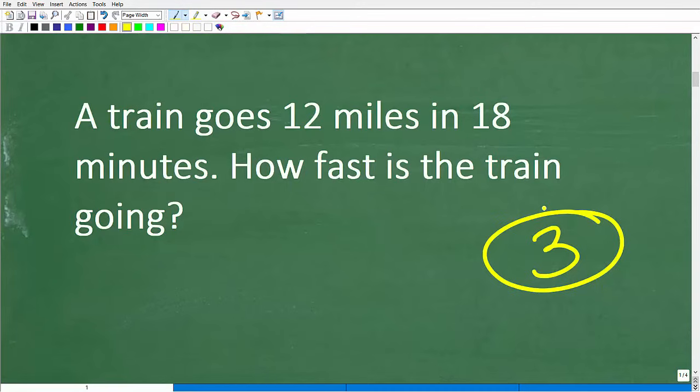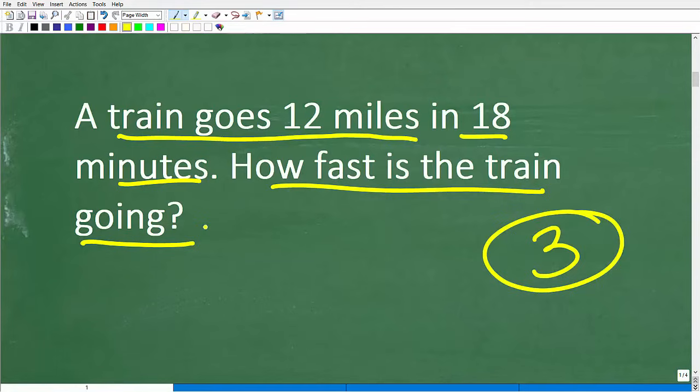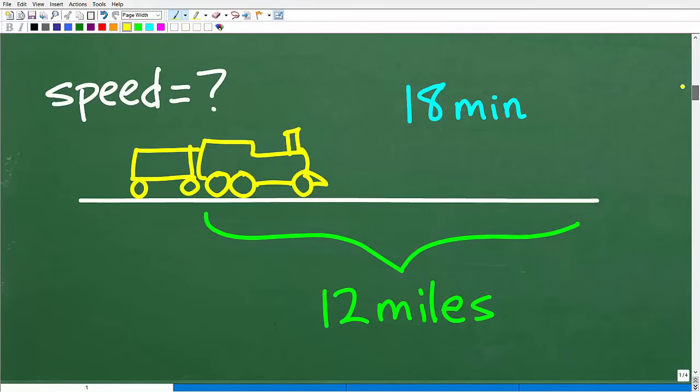Even with simple problems, you can oftentimes go too fast and then get confused. You definitely don't want to confuse the information. So read the problem more than once. And then what you want to do is try to model this situation. So we have this train, it covers 12 miles in 18 minutes. So how fast is the train going? Now, a good idea to solve any problem is just to kind of model the situation. Oftentimes, visualizing the problem can help you see the solution.